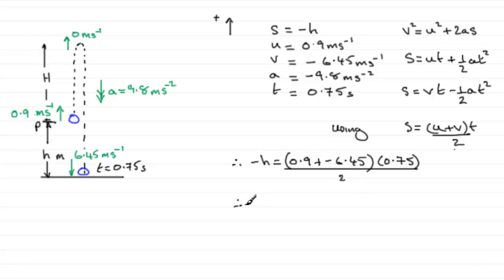So if we work that out, 0.9 plus minus 6.45, well, that's going to be a minus number there, times 0.75 over 2. You end up with a minus value.